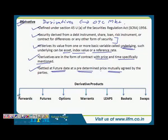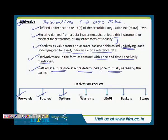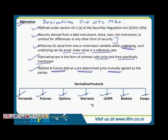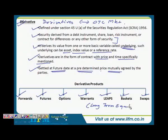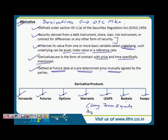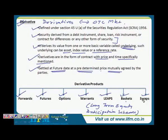We will have a look at different types of derivative products: forwards, futures, options, warrants, LEAPs or Long-Term Equity Anticipation Schemes, baskets — which are a form of index — and swaps, which we have already covered in a previous video.